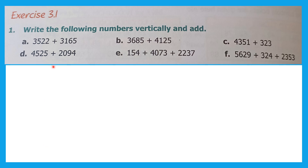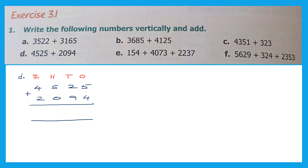Now let's do question D. Let's write the places: ones, tens, hundreds, and thousands. The number is 4,525 plus 2,094. Let's add: 5 plus 4 is 9. 2 plus 9 is 11, carry 1. 5 plus 0 plus 1 is 6. And 4 plus 2 is 6. So we have 6,619.